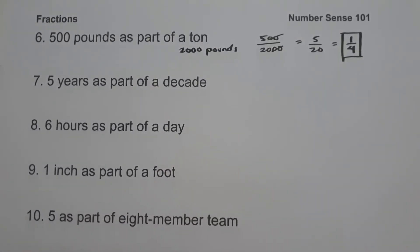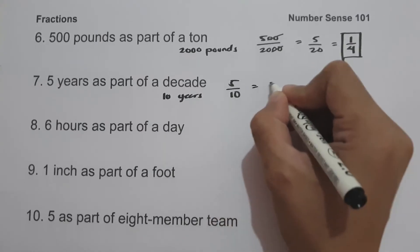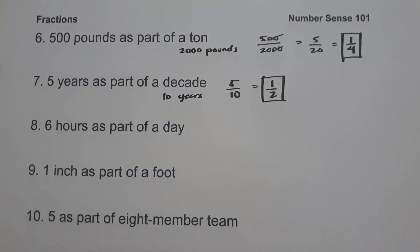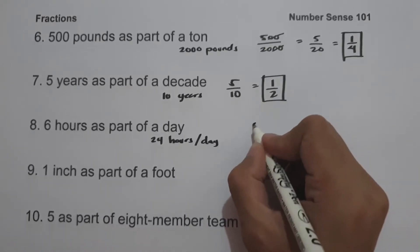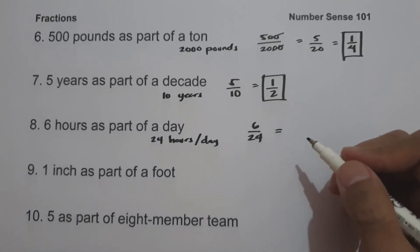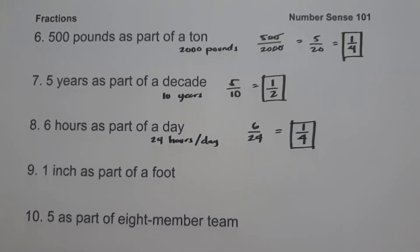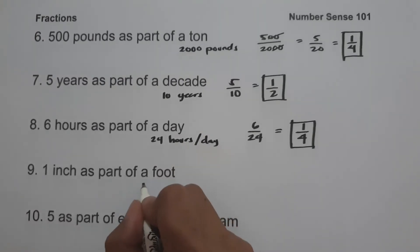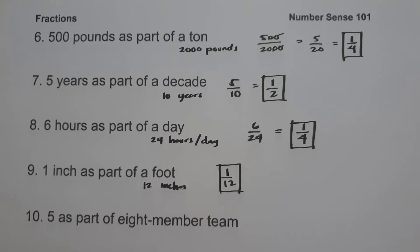On number 7, we have 5 years as part of a decade. A decade is 10 years, so this is 5 over 10, or simply 1 half. On number 8, we have 6 hours as part of a day. There are 24 hours in a day, so this is 6 over 24. Since they are divisible by 6, this simplifies to 1 over 4. On number 9, we have 1 inch as part of a foot. There are 12 inches in a foot, so this is 1 over 12. On number 10, we have 5 as part of an 8-member team, so this is 5 over 8.